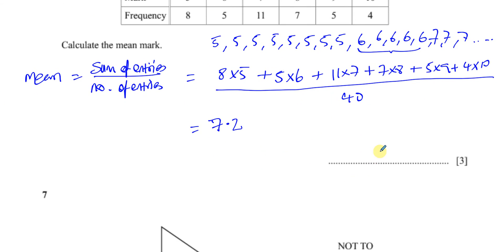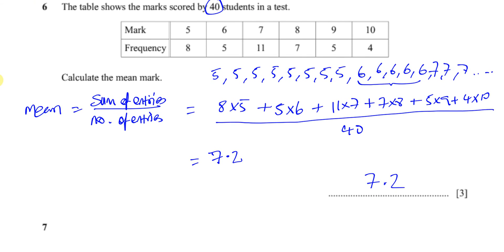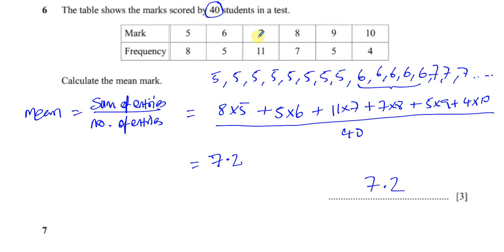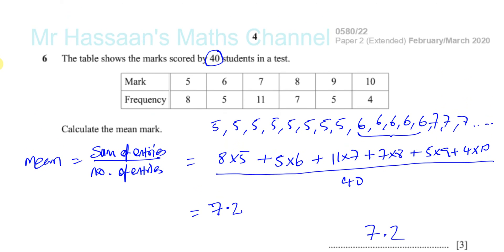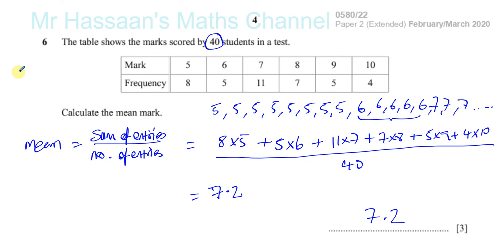The answer is 7.2. Write the answer in the answer space — there's no rounding needed, it's an exact answer. Even though there's no mark of 7.2, you write down the mean as 7.2. Don't round it down just because there's no 7.2 here. The mean mark can have a decimal value — even the mean number of children people have can be a decimal. It's used to compare different sets of data. It doesn't matter if it's a decimal; don't round it down.